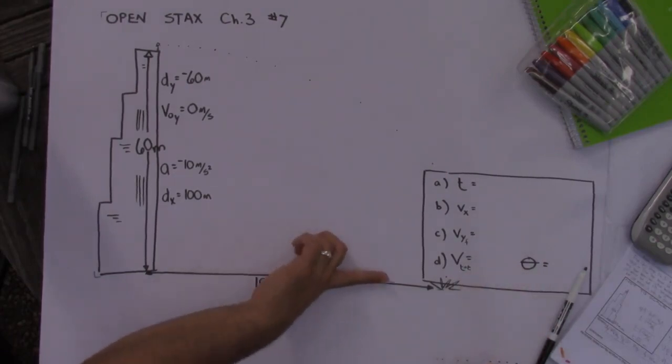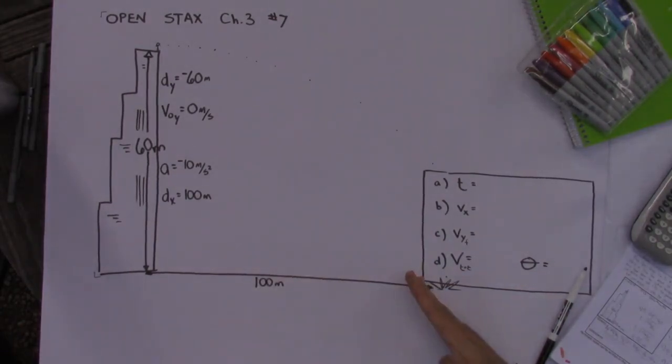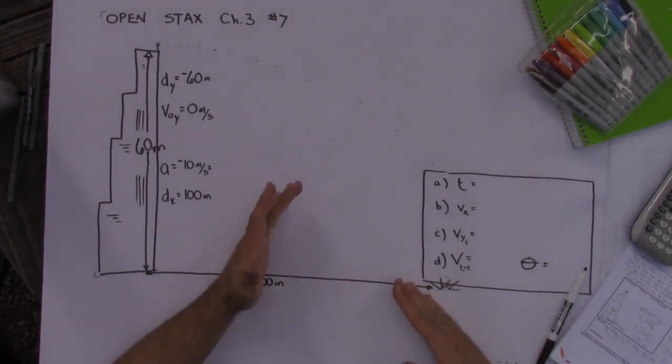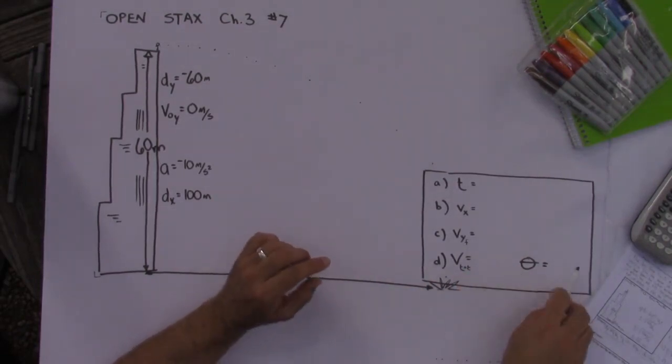What that is is there's going to be some velocity in the x, there's going to be some velocity in the y direction, and we're going to need to find that hypotenuse. And finally, because it says velocity and velocity is a vector, we'll need to get that angle.